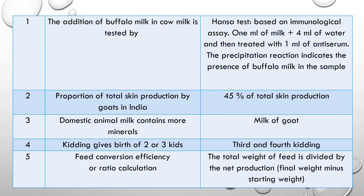Question 1: The addition of buffalo milk in cow milk is an adulteration. The test to detect this is the Hansa test, which is based on immunological assay of buffalo milk. 1 ml of milk is taken, 4 ml of water is added, then treated with 1 ml of anti-serum of buffalo milk. A precipitation reaction indicates the presence of buffalo milk in the sample. This is an important test from an examination point of view.